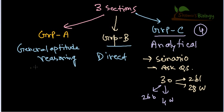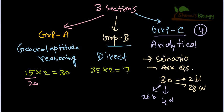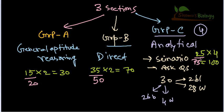Regarding mark distribution: in Group A you need to answer fifteen questions worth two marks each, totalling thirty marks, from twenty provided questions. In Group B, you answer thirty-five direct questions worth two marks each, from fifty provided. In Group C, you answer twenty-five questions worth four marks each from seventy-five provided, totalling one hundred marks. Group C alone carries as many marks as Group A and B combined.